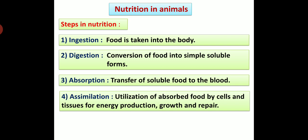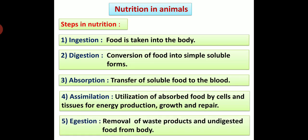Fourth: Assimilation - there is utilization of absorbed food by cells and tissues for energy production, growth and repair. Fifth step: Egestion - in this step, there is removal of waste products and undigested food from the body. In this way, ingestion, digestion, absorption, assimilation and egestion are the different steps in nutrition in animals.